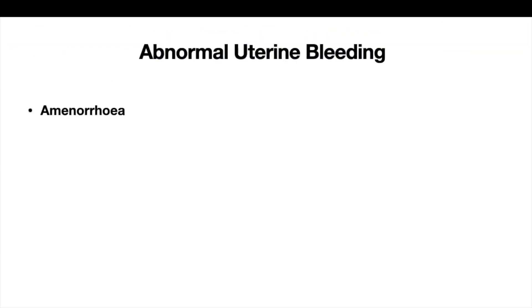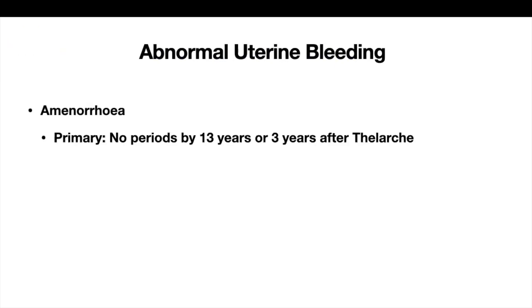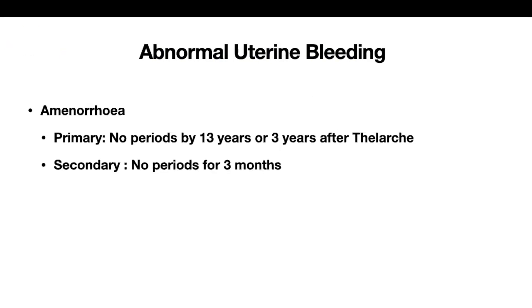What is abnormal uterine bleeding? Amenorrhea — primary amenorrhea is when there are no periods by the age of 13, or more than three years after the girl has already had her thelarche and not yet started her period. Secondary amenorrhea is when there are no periods for three months.